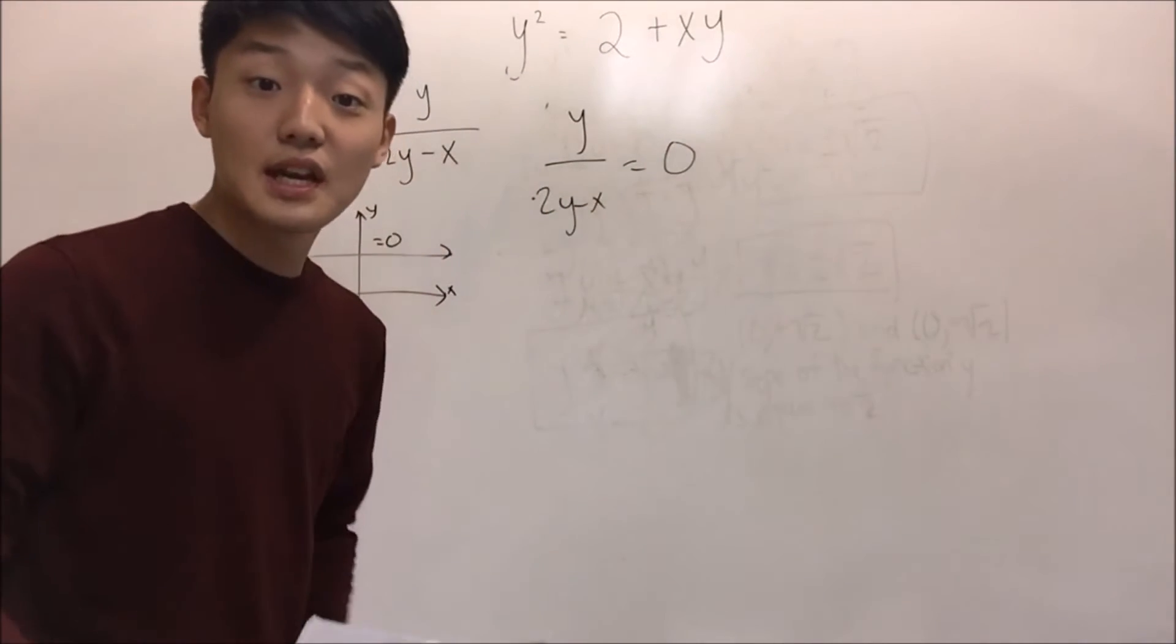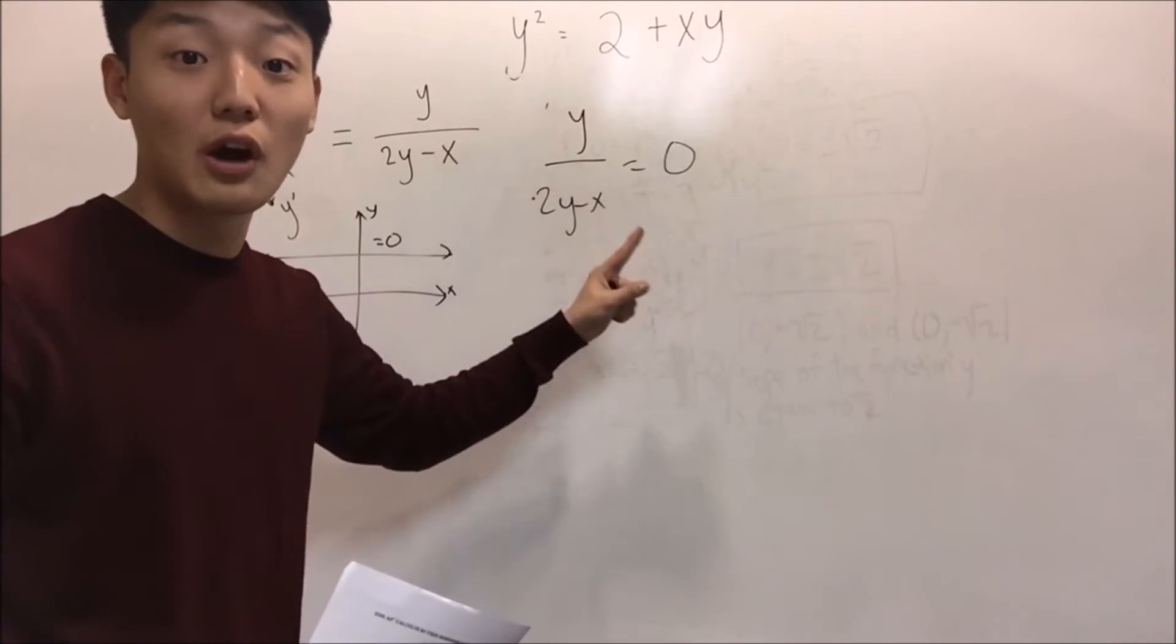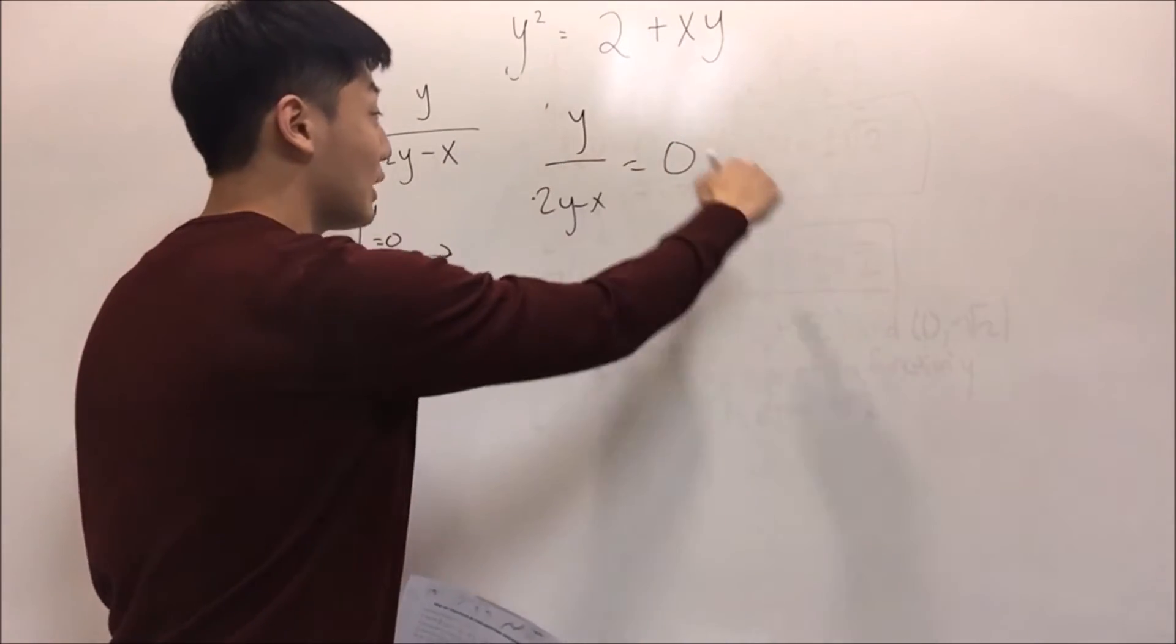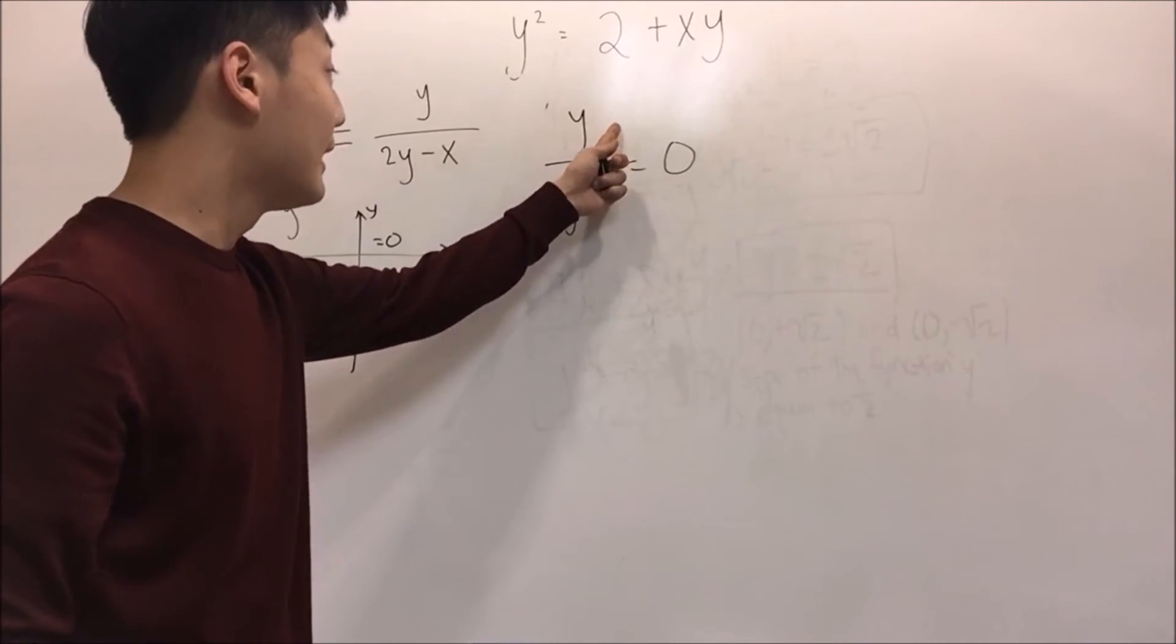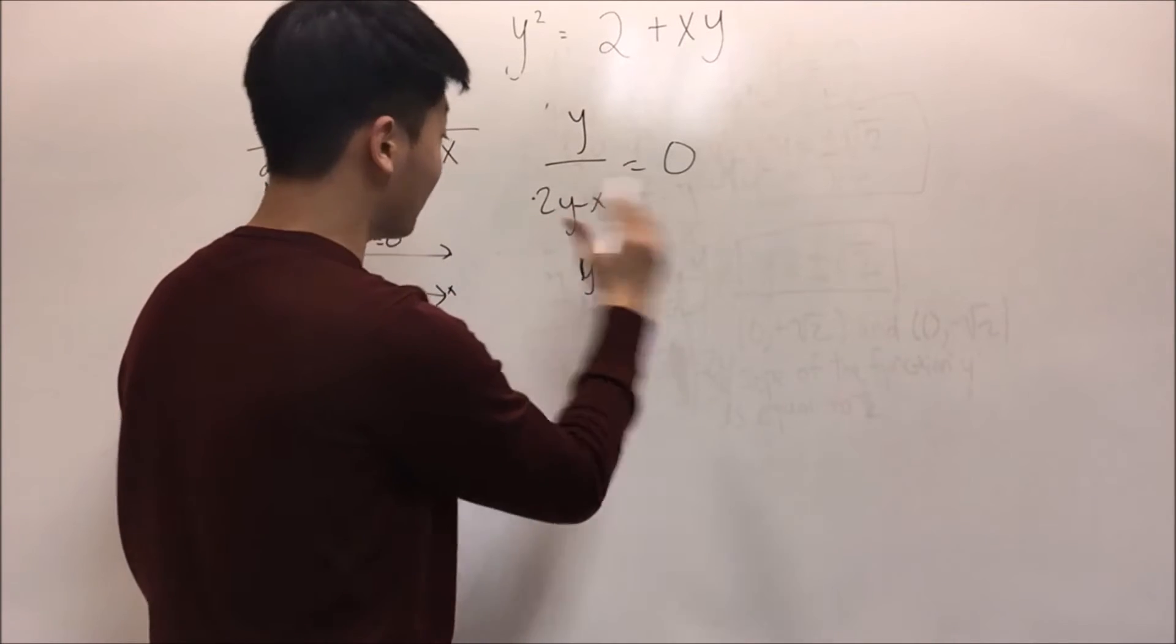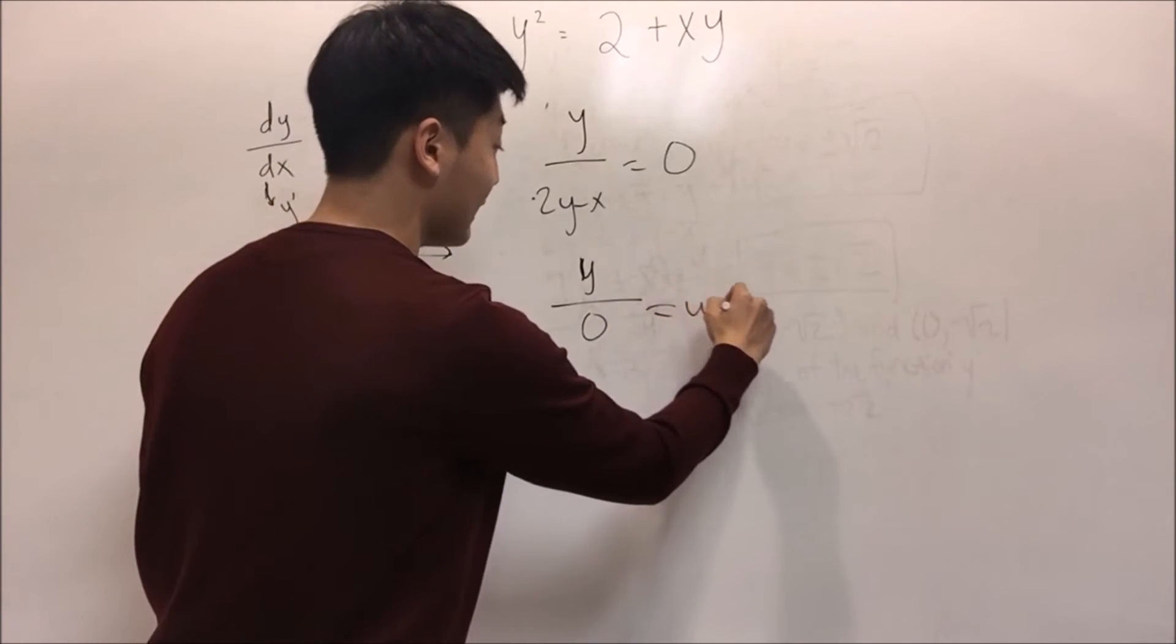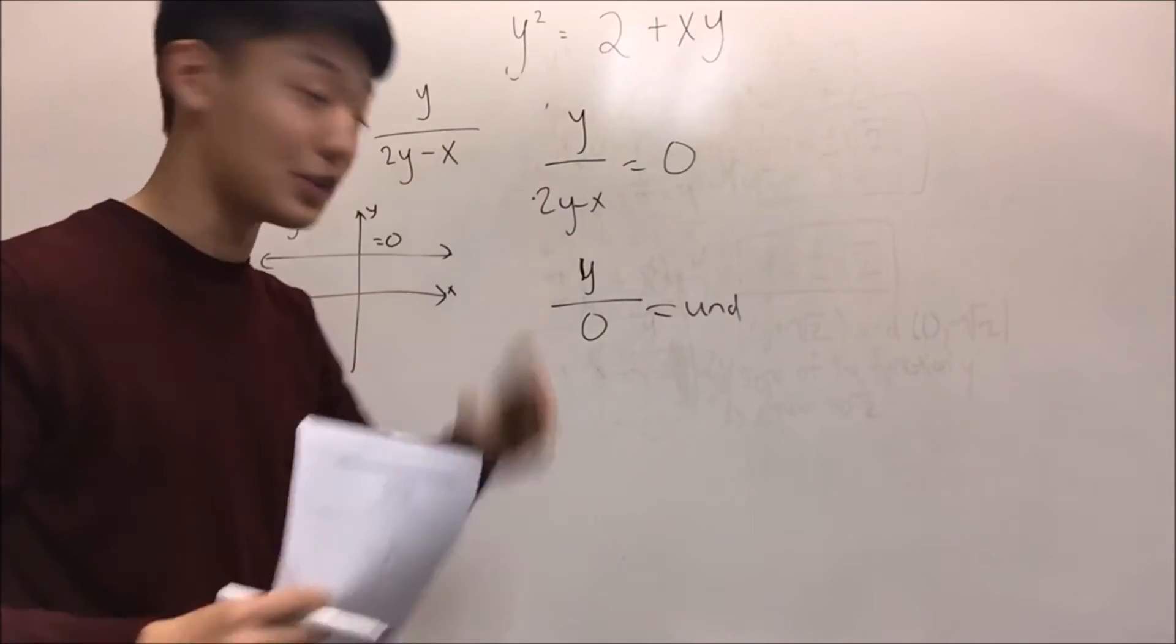Sometimes there are students who cross-multiply this and get this question wrong. However, let's think simply. When a fraction has to equal zero, that means the top part has to equal zero. Because if we make the bottom part equal zero, it will be something over zero, and this is undefined. So the top part, which is the numerator, has to equal zero.